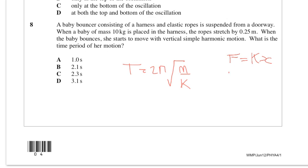The key thing is here, we need to work out what the k is, but we know some key information from Hooke's Law. We know the force is 10g, and we know that the extension is 0.25, so we know that k is 40g. So we can stick that into our equation, 10 divided by 40 times 9.81 square root times 2 pi, and that gives you 1.0, so option A for this one here.